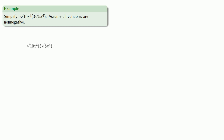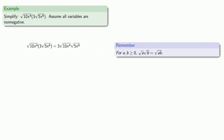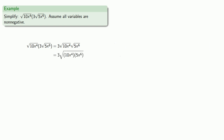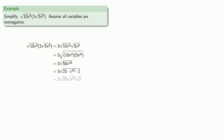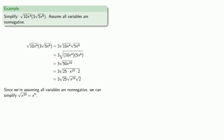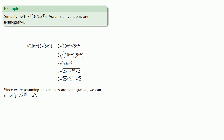One more example. We take this product of square roots and rearrange our factors. The product of square roots is the square root of a product. We simplify the inside, finding perfect square factors. Here we've assumed that all of our variables are non-negative, and because of that assumption, the square root of x to the power 10 can be reduced to x to the power 5. Putting everything together gives us our final answer.